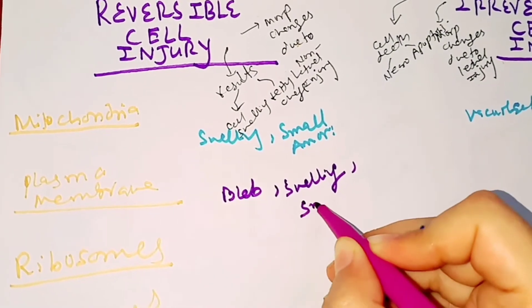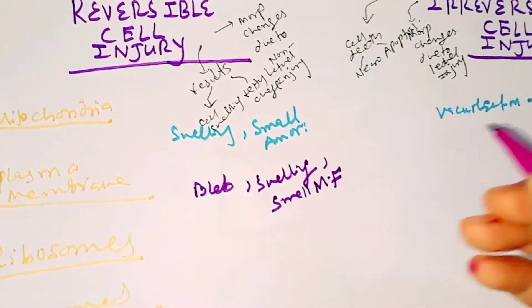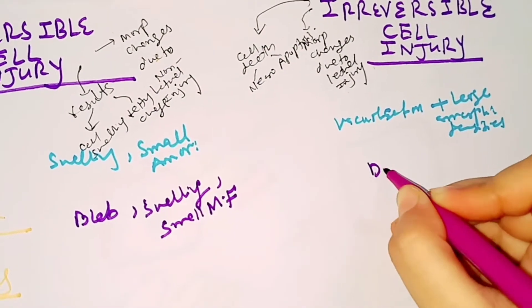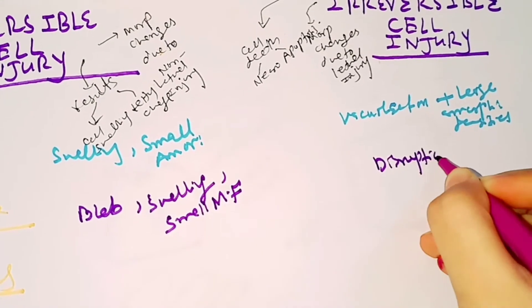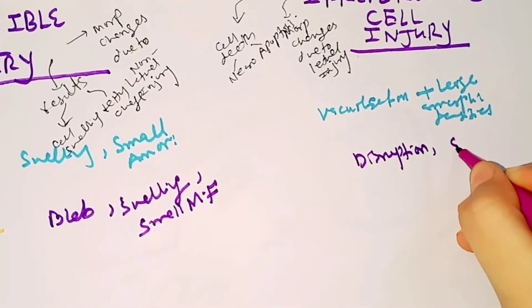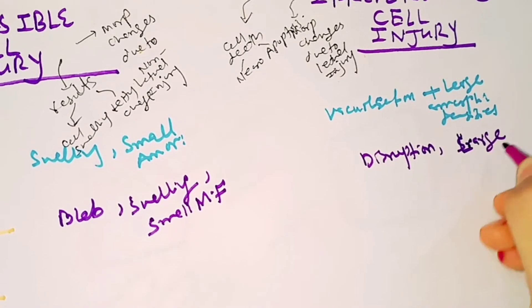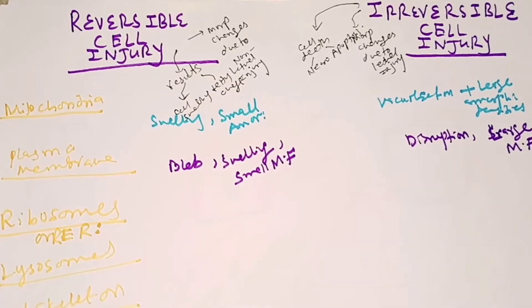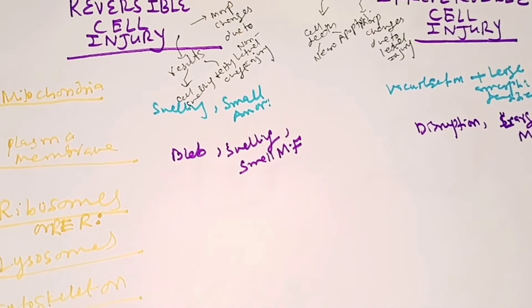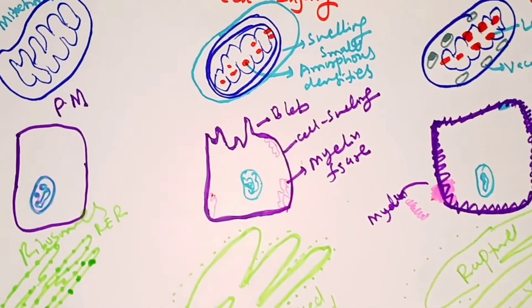So to summarize the plasma membrane: in reversible cell injury there is bleb formation, cell swelling, and small myelin figures; in irreversible cell injury there is disruption and large myelin figures. Now let's move to ribosomes and the rough endoplasmic reticulum.